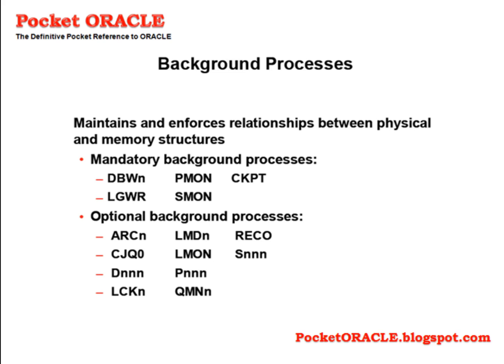The background process is started when the instance starts and maintains and enforces relationships between physical and memory structures. The mandatory background processes are DBWN, PMON, SMON, CKPT, and LGWR. There are also a number of optional background processes. Some can be tuned — for example, you can decide how many database writer processes to launch, and you can to a certain extent control how frequently they will write changed data from the database buffer cache to the data files.